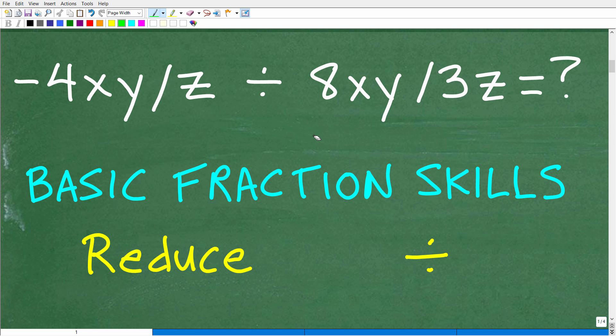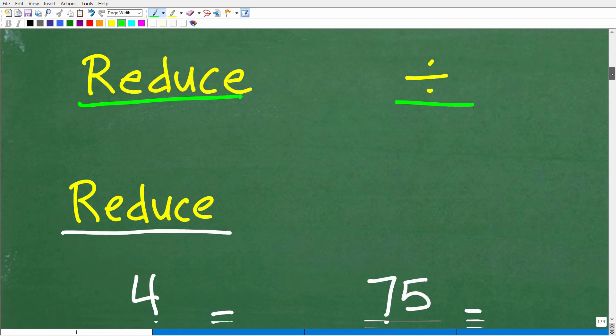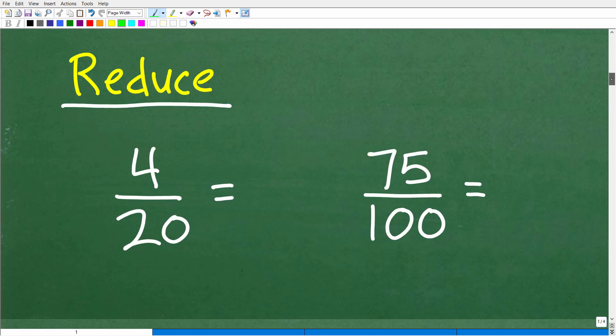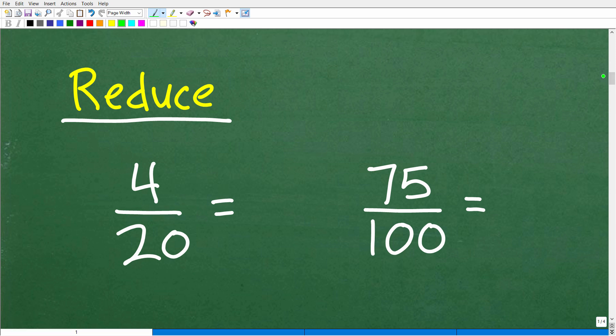Anytime in mathematics you hear this word rational, more or less you want to be thinking of the word fraction. Rational expressions, rational equations are basically equations that involve fractions with variables. Now there's a little bit more to it than that, but if you remember that I think that'd be a good start. So what are the skills that we need to understand? You need to know how to reduce a fraction or simplify a fraction and how to divide fractions.